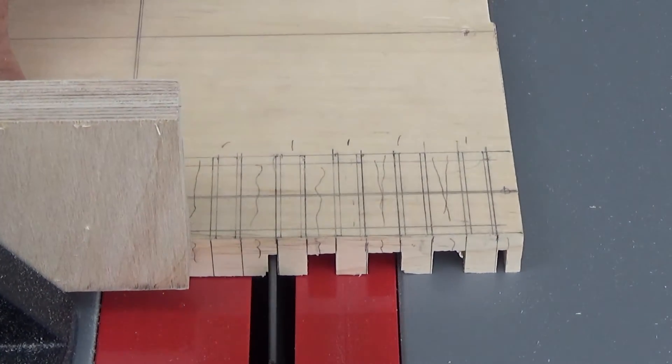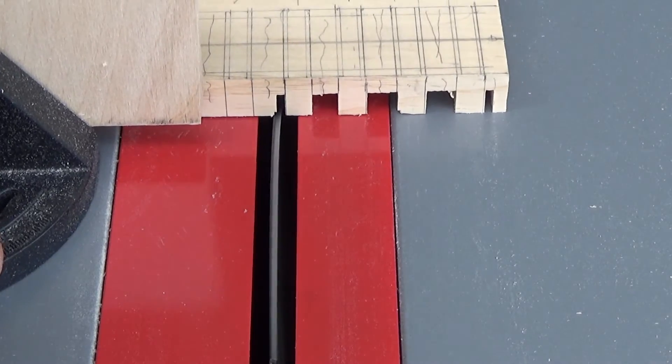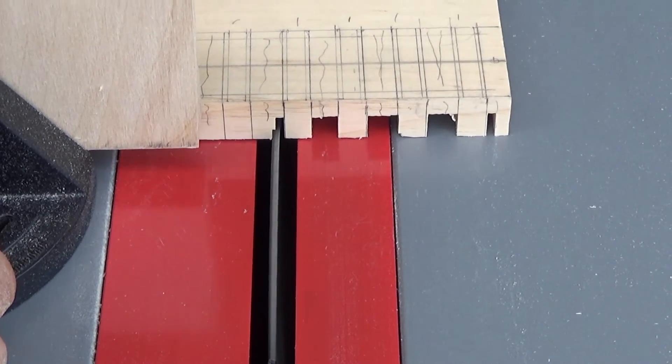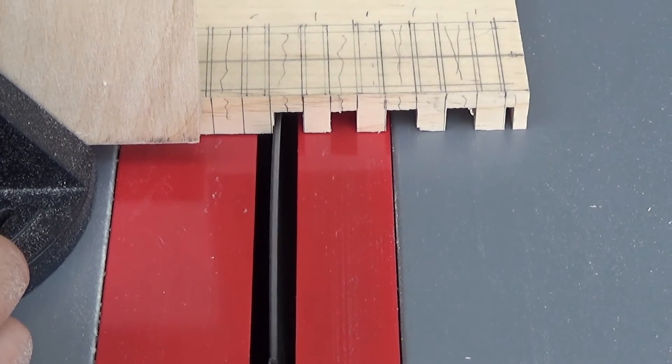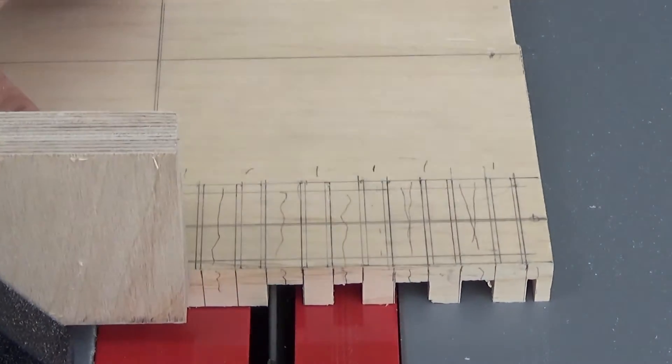And this again, just showing you the same process. Make sure your blade is on the proper side of where you need to be cutting. Some of them I did it differently. I'd cut each side and then go in the middles. And some I'd just go straight through the middle as just trying different ways to do this.